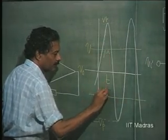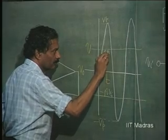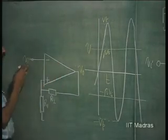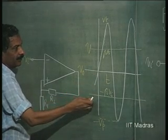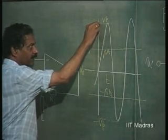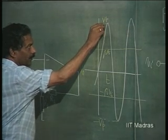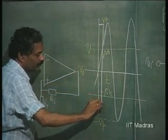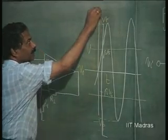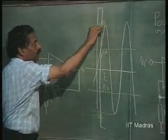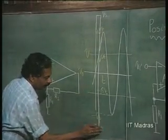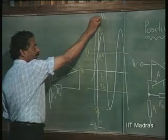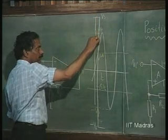So let us say this is β·Vs and this is minus β·Vs. Originally, when the input was negative, output was positive — it will start with positive voltage. At β·Vs, it will change state to negative, going from plus Vs to minus Vs. This is the point at which change of state will occur. Thereafter, the input voltage goes on increasing — nothing happens — until it further starts decreasing.